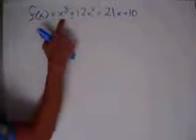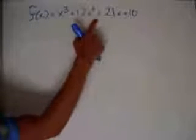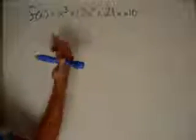So I have a positive x³, a positive 12x², a positive 21x, and a positive 10. So I have no change in sign of f(x), which means I have no positive real zeros.